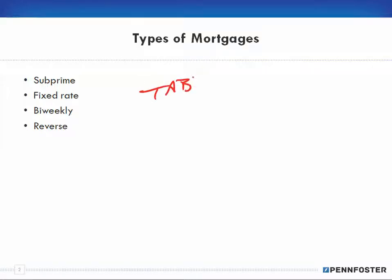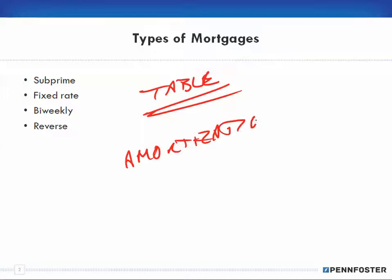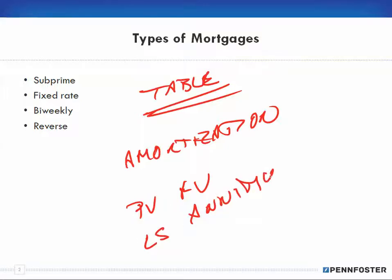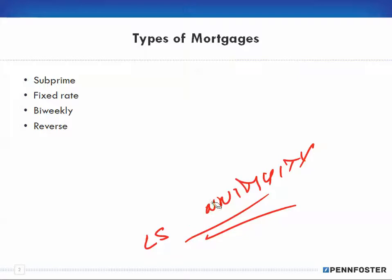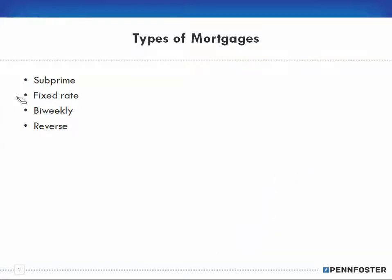We're going to use a different table — an amortization table — but you use it the same way as a present value or future value table from previous chapters, whether it was a lump sum or an annuity. They all work exactly the same way: you look up a factor and multiply. The concepts and skill sets you've developed carry right over, and this chapter should go by relatively quickly.